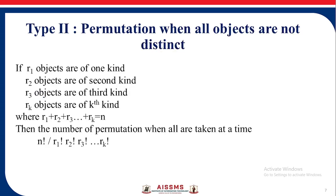Type 2 of permutation is when all objects are not distinct. If r1 is an object of one kind, r2 of a second kind, r3 of a third kind, up to rk of the kth kind, where r1 + r2 + ... + rk = n, then the number of permutations when all are taken at a time is n factorial upon (r1 factorial × r2 factorial × r3 factorial × ... × rk factorial).